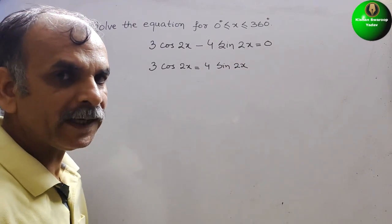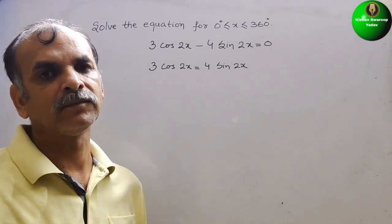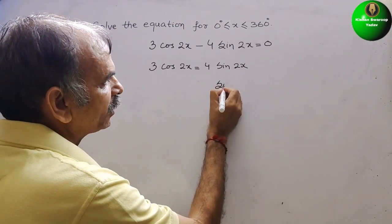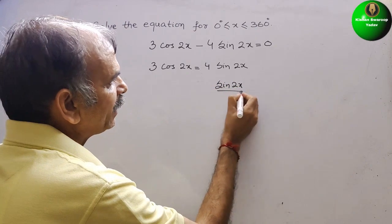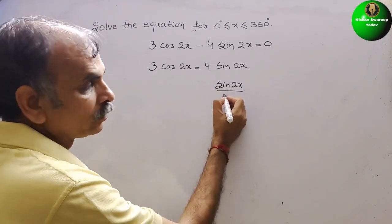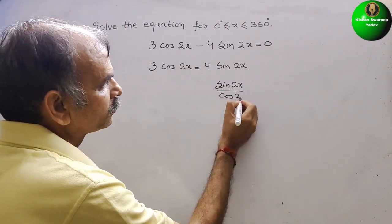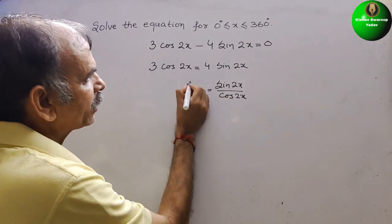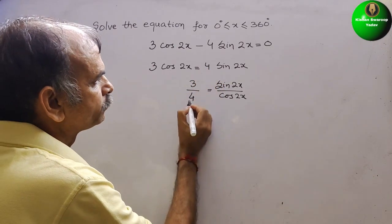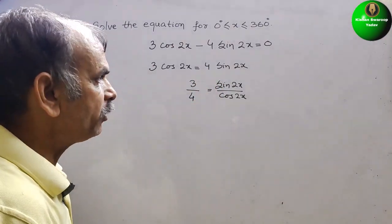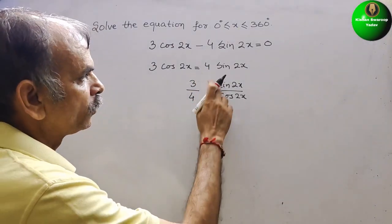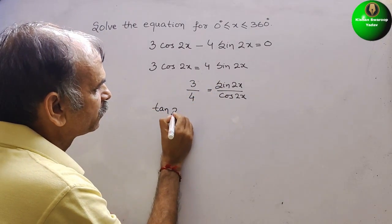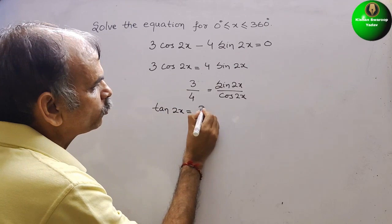Now we will make it as tan 2x. How it will be? So this sin 2x will be here, this will come down. Cos 2x is equal to, this will be at the top and this will be at the bottom. So we can say tan 2x is equal to 3 by 4.